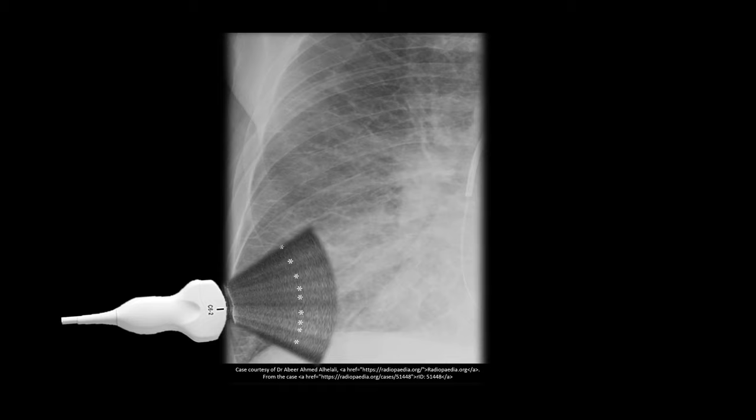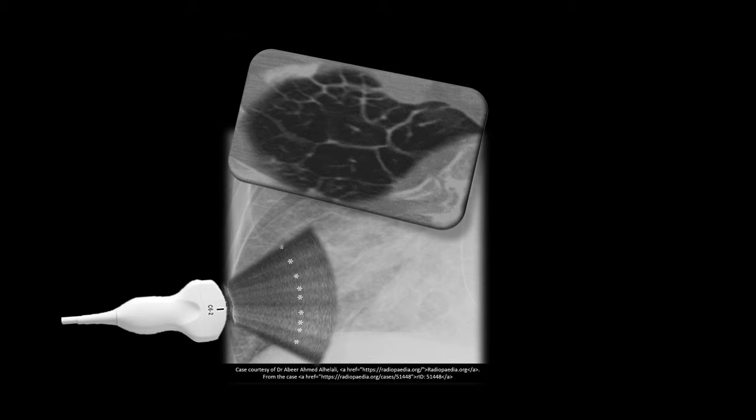On chest x-rays, this interlobular septal thickening will be represented by the Kerley B lines in the periphery of the lungs, demonstrated by these red lines. These B lines in the periphery of the lungs are well defined in the ultrasound as well. They are delimited by these white asterisks. If you trace a line at this level and make axial slices on a CT scan, you should see the interlobular septal thickening like that.